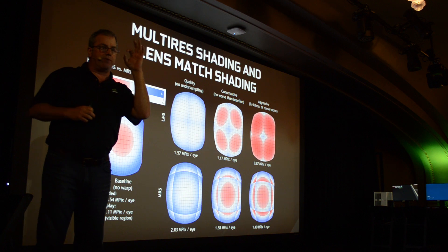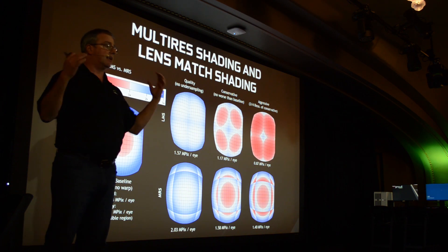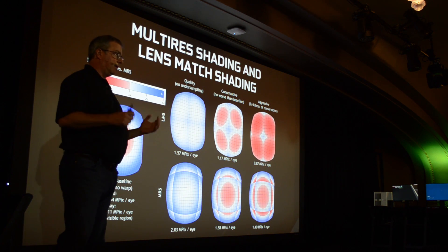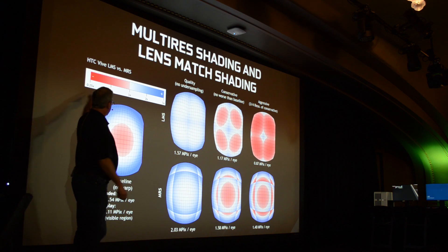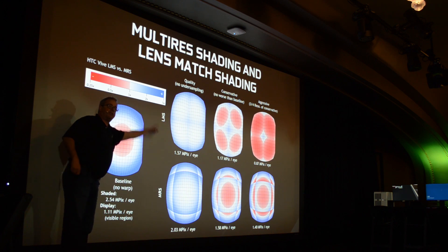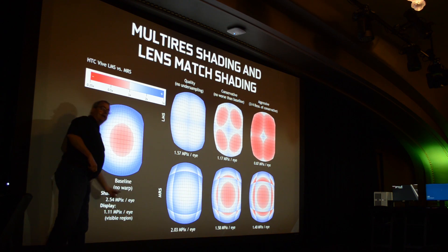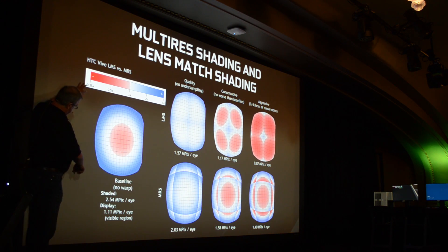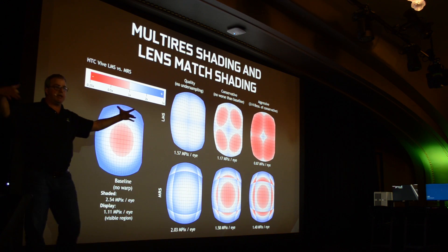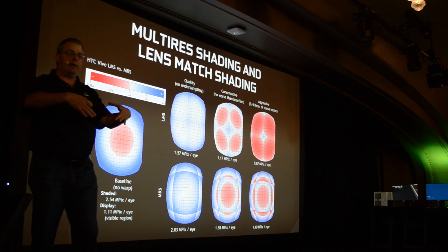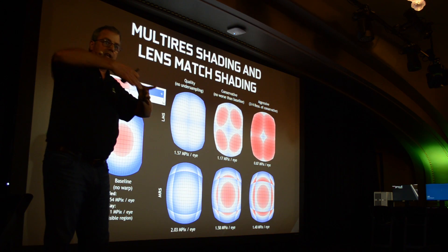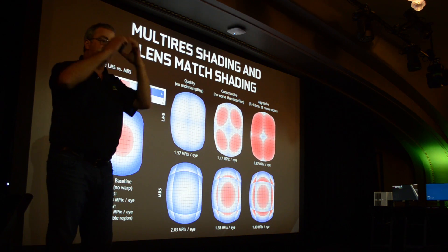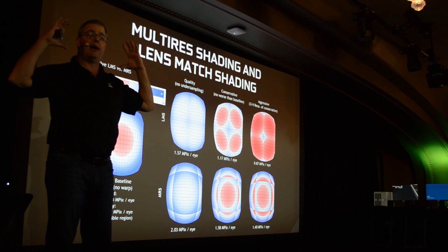There's a lens in your VR headset that the game doesn't know about. What the VR runtime has to do is take a fairly large square that's rendered — imagine it's about this big — and squish it in. Because you're going to view that squished-in image through a lens that's going to blow it back out.